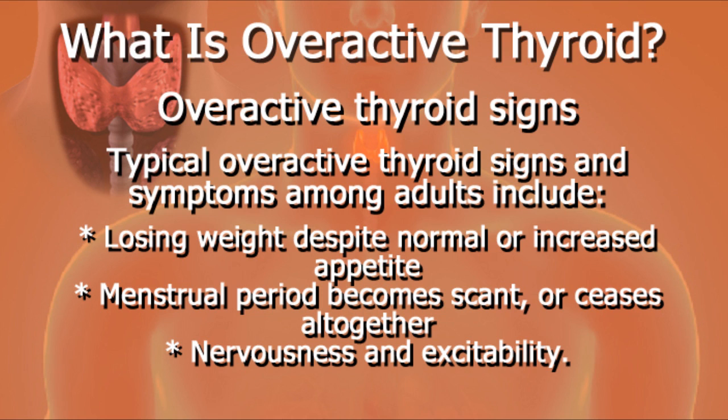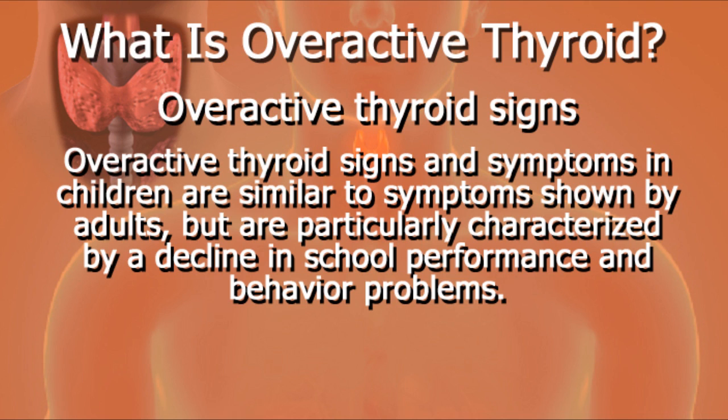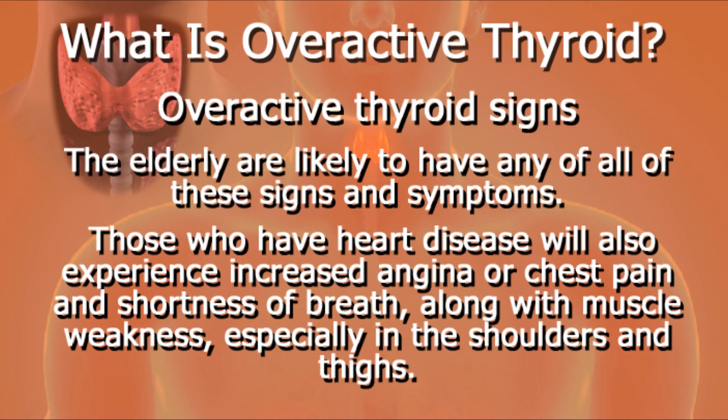A woman's menstrual period becomes scant or ceases altogether. Nervousness and excitability are also common. Overactive thyroid signs and symptoms in children are similar to those in adults but are particularly characterized by decline in school performance and behavioral problems. The elderly are likely to have any or all of these signs and symptoms, and those with heart disease will also experience increased angina or chest pain, shortness of breath, and muscle weakness, especially in the shoulders and thighs.